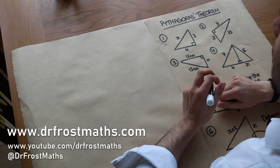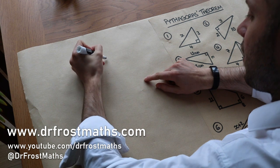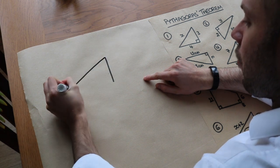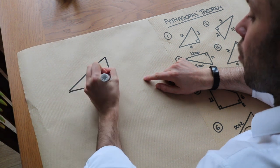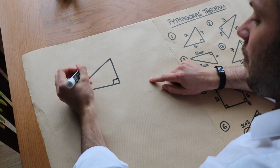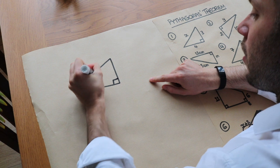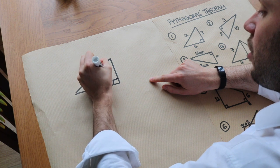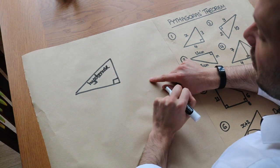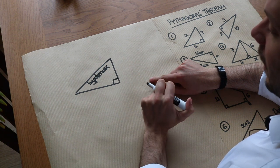Hello and welcome to this Dr Frost Maths video on Pythagoras' theorem. Pythagoras' theorem is a rule that relates the three sides of a right-angled triangle — and it has to be a right-angled triangle. The longest side of the right-angled triangle is called the hypotenuse, which is opposite the right angle.